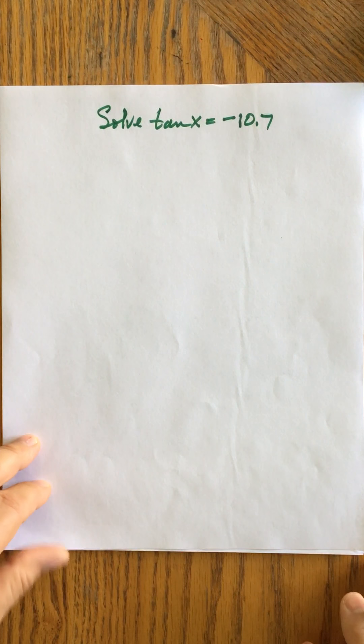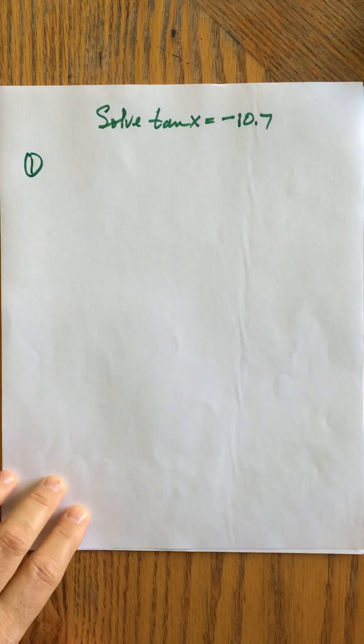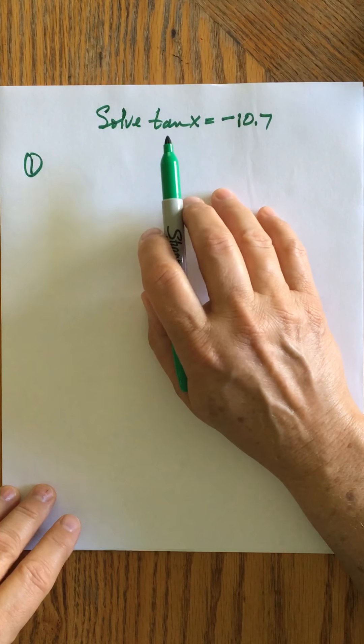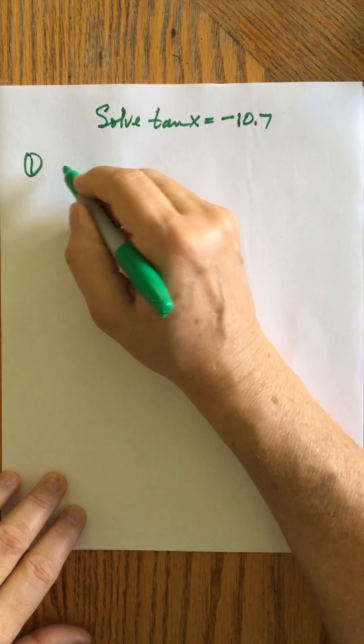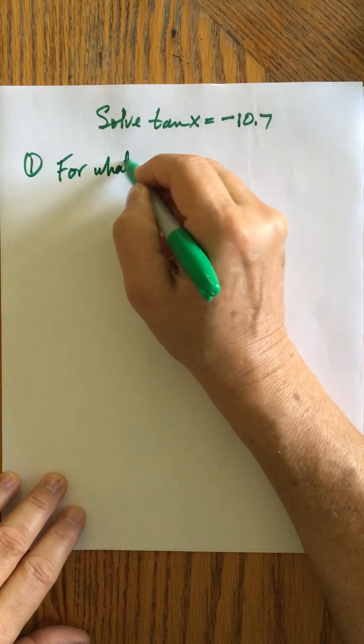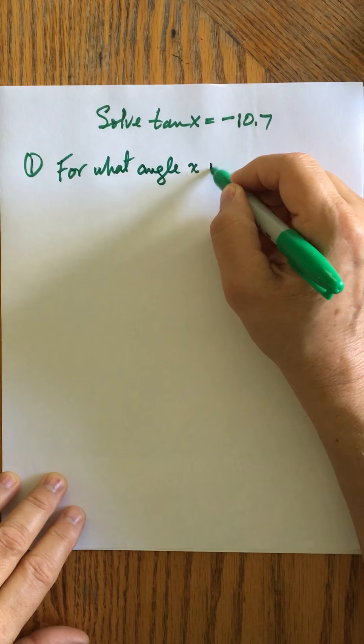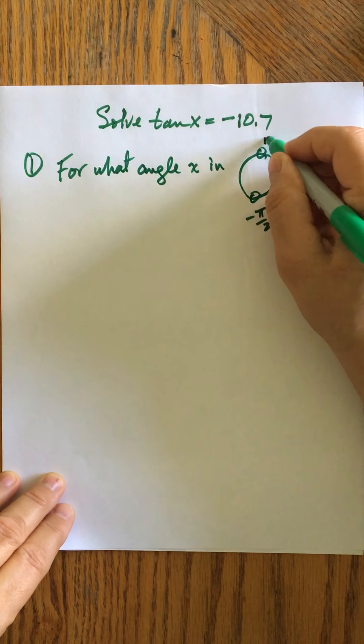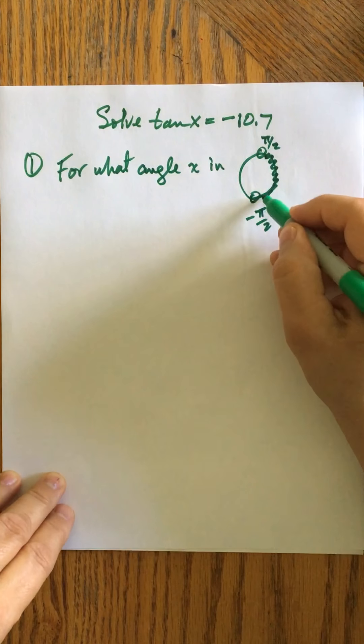So let's take a look at solving this. So here I would want to always ask myself this question. And it may seem like, why do I have to go through this every time? You do have to do it. You don't necessarily have to write it down once you've done enough of these, but you really do have to go through the process of thinking, what ratio am I using? If it's sine, it's going to be y over r. Cosine, it's going to be x over r. Tangent, it's going to be y over x. And that really affects things. So I want to ask myself, for what angle x, and remember with tangent, I've got to think, where am I allowed to look at solutions? It's here and here, negative pi over 2 to pi over 2, anywhere in here.